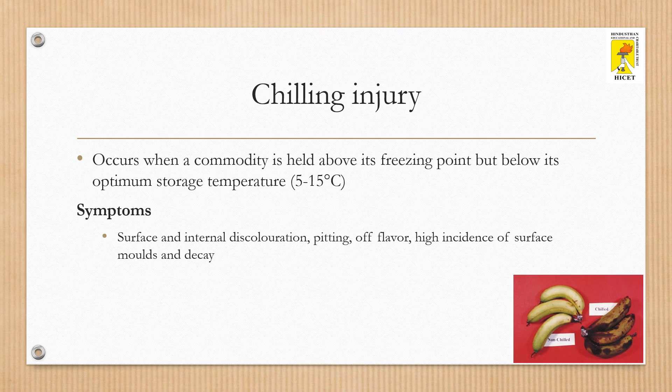Chilling injury occurs when a commodity is held above its freezing point but below its optimum storage temperature. For example, banana peel turns black when kept in a refrigerator over a period of time. Common symptoms of this injury include surface and internal discoloration, pitting, water-soaked areas, uneven ripening or failure to ripen, off-flavor, high incidence of surface molds, and decay.